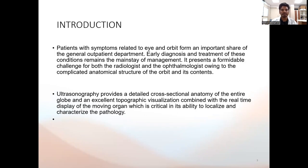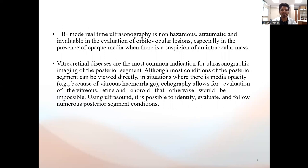Patients with symptoms related to eye and orbit form an important share of general OPD. Early diagnosis and treatment of these conditions remains the mainstay of management. It presents a formidable challenge for both the radiologist and the ophthalmologist owing to the complicated anatomical structure of the orbit and its contents. Ultrasonography provides detailed cross-section anatomy of the entire globe and excellent topographic visualization combined with real-time display of the moving organ, which is critical in its ability to localize and characterize pathology. B-mode real-time ultrasonography is non-hazardous, atraumatic and invaluable in the evaluation of orbitocular lesions, especially in the presence of opaque media when there is a suspicion of intraocular mass.